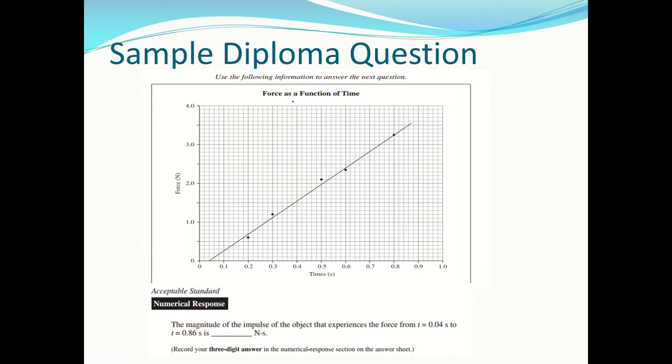The magnitude of the impulse that an object experiences from 0.4 to 0.86. You have to be careful with this one. You should know that impulse is equal to the area under the graph. If you look at the scale, this is 0.82, 84, 86 — so the third line over is 86.